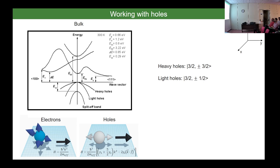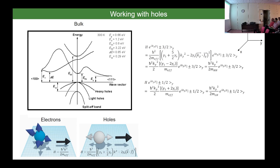This is written down for germanium in the so-called spherical approximation, where gamma_2 equals gamma_3 — already a simplified version. But already here there is one important consequence: in bulk, the spin degree of freedom — really I should speak about pseudo-spin — correlates with the direction of motion. The thing becomes even more interesting when you add confinement, because nowadays you don't work with bulk materials but with confined materials.